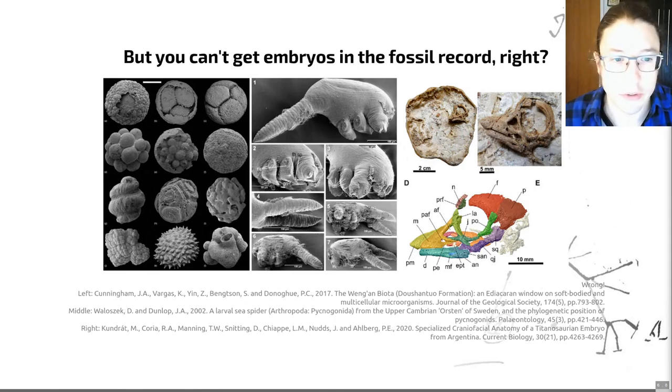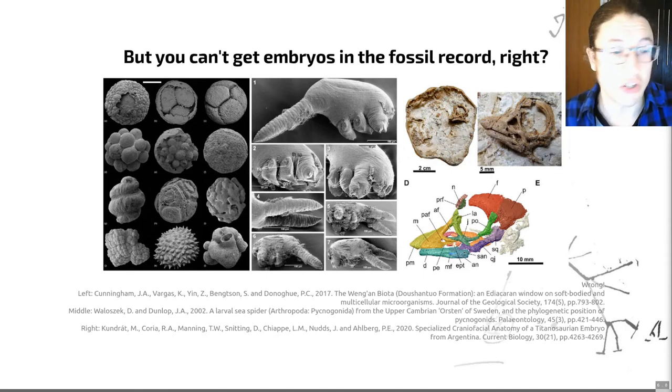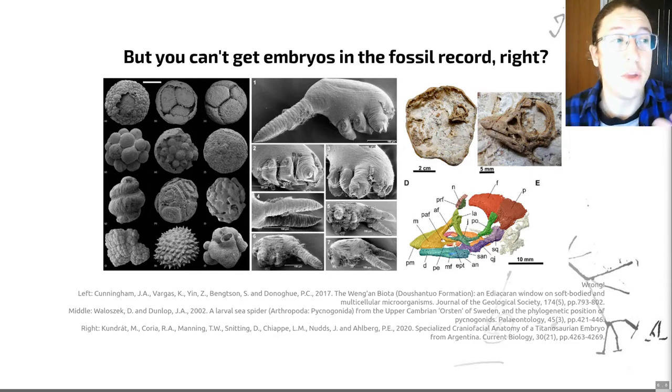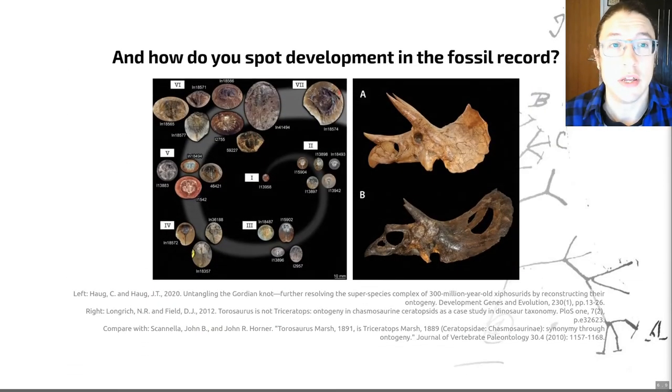This particular example is actually a pycnogonid, a sea spider, from the Orsten deposit. Finally, we have more recent embryos of slightly larger animals shown on the right hand side here. This is an example from the world of dinosaurs—this is actually a baby titanosaur from Argentina revealed through CT scanning, shown on the bottom here. This work has shown early development of stereoscopic vision within the species and it has revealed significant changes in the rate and stages of cranial ossification—that's the formation of bones in the head—when compared to non-sauropod embryos, close relatives of these dinosaurs that aren't actually members of this group, the sauropods. So those are some interesting insights into the development of dinosaurs.